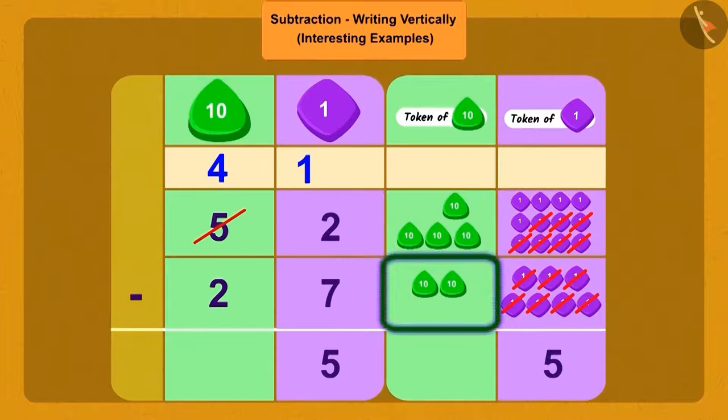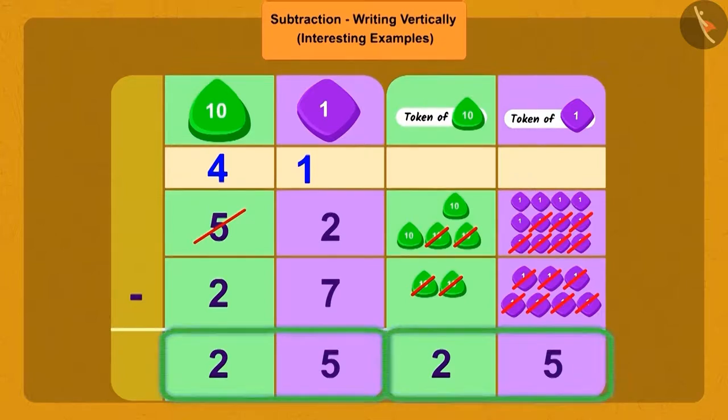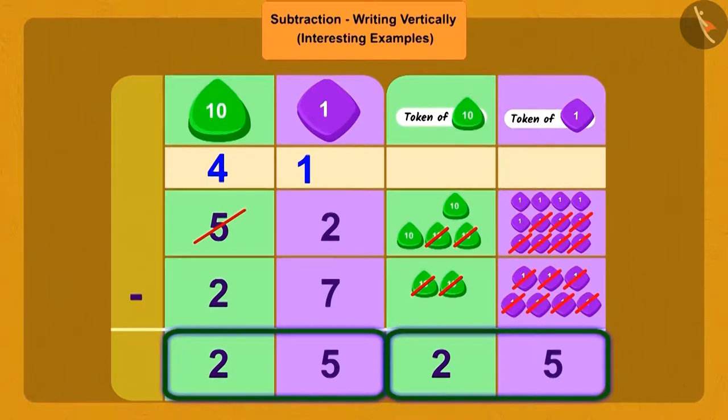So now how many ones do we have? 12 ones. Now subtracting seven ones from 12 ones is five ones, and subtracting two tens from four tens is two tens. So how many more pages did Shere Khan read than Bola? Absolutely correct, 25 pages. Just like you, the bird has also answered the puzzle correctly.